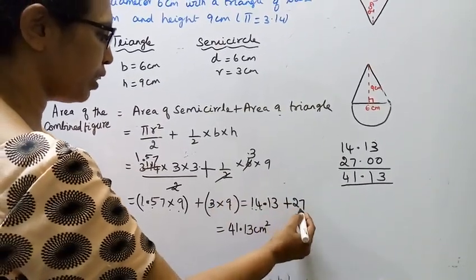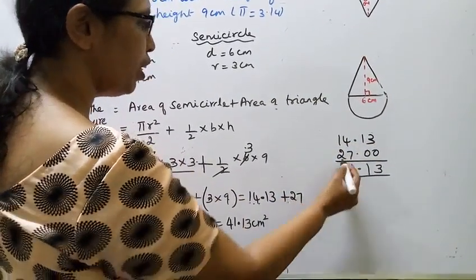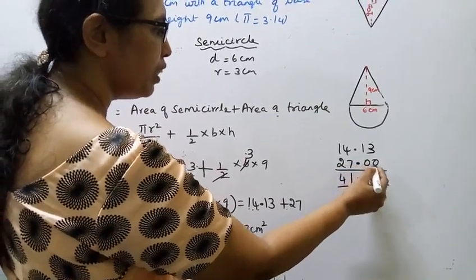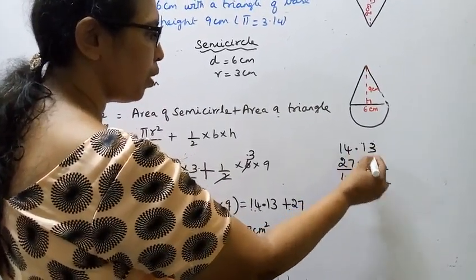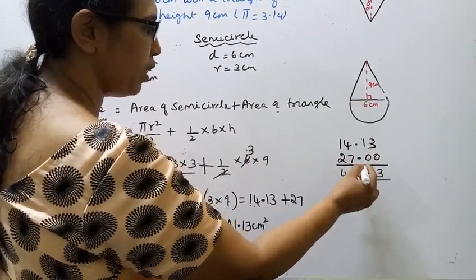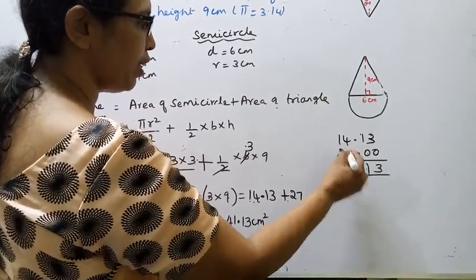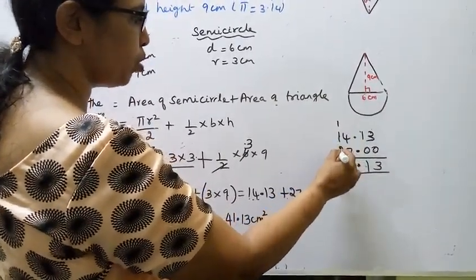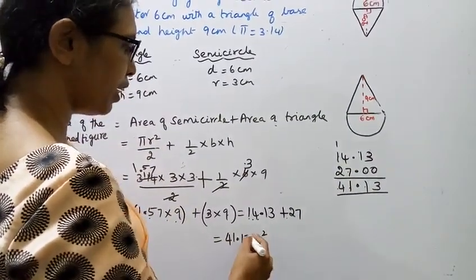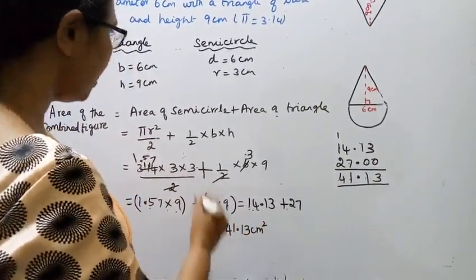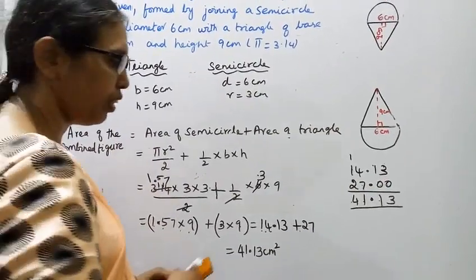3 nines are 27, giving 14.13 and 27. Adding: decimals 00; 3 plus 0 = 3; 1 plus 0 = 1; point; 4 plus 7 = 11, carry 1; 1 plus 1 = 2; 2 plus 2 = 4. Area of the combined figure = 41.13 cm squared.